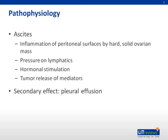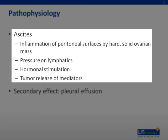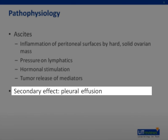The pathophysiology behind the ascites and pleural effusion is currently not known. Meigs suggested that inflammation of the peritoneal surfaces by a hard, solid ovarian tumor could stimulate the production of peritoneal fluid. Other proposed mechanisms causing the ascites include pressure on surrounding lymphatic vessels, hormonal stimulation, and release of mediators from the tumor leading to increased capillary permeability. The pleural effusion is thought to be secondary to the passage of ascitic fluid to the pleural space through the diaphragm or diaphragmatic lymph vessels.